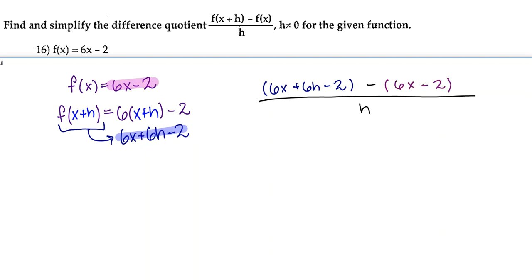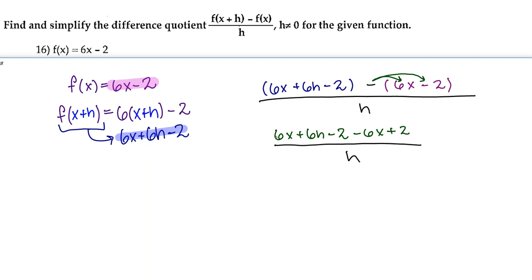Now we're going to simplify this as much as possible. In the numerator, we're going to have 6x plus 6h minus 2 minus 6x plus 2 — remember, all we did was distribute the negative. And in the denominator, we still have over h. Now let's group all the like terms in the numerator: the 6x and the negative 6x cancel out, and the negative 2 and positive 2 cancel out. We're left with 6h over h.